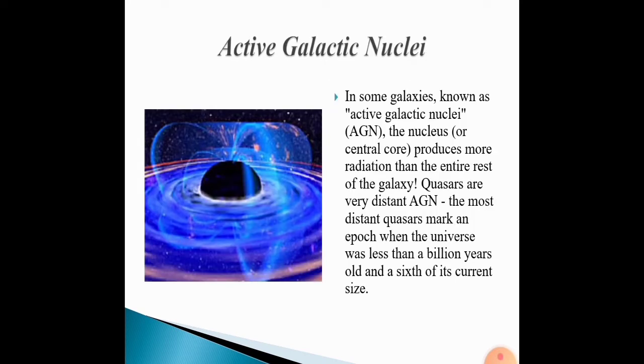Active galactic nuclei. In some galaxies known as active galactic nuclei, AGN, the nucleus or central core produces more radiation than the entire rest of the galaxy. Quasars are very distant AGN. The most distant quasars mark when the universe was less than a billion years old and a sixth of its current size.